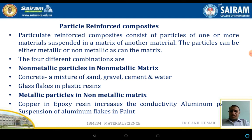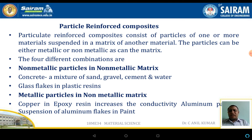Particle reinforced composites consist of particles of one or more materials suspended in the matrix of another material. The particles can be metallic or non-metallic, suspended freely in the matrix. There are four different combinations. First: non-metallic particles in a non-metallic matrix, like concrete - a mixture of sand, gravel, cement, water, and steel - or glass flakes mixed in a plastic resin.